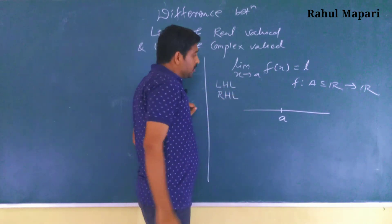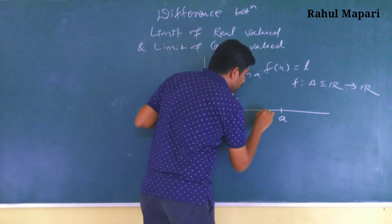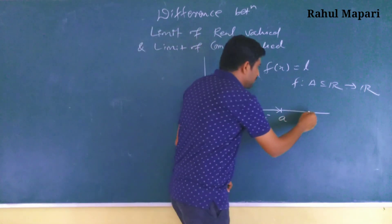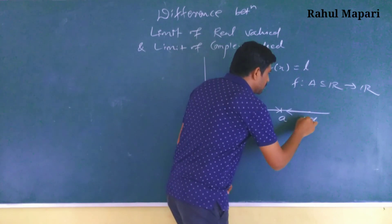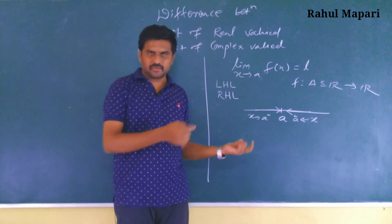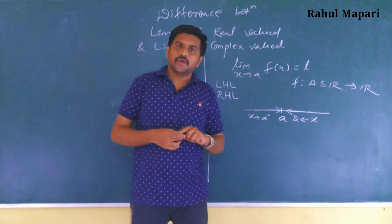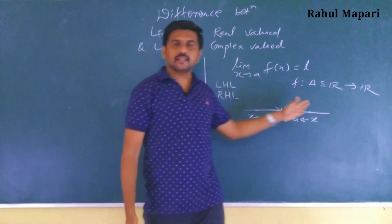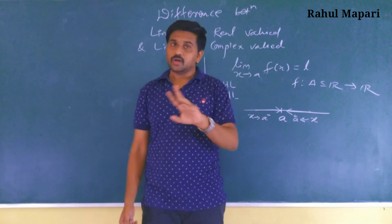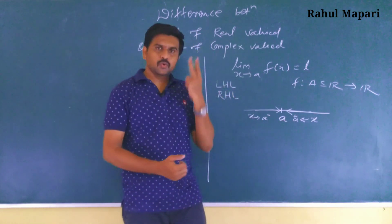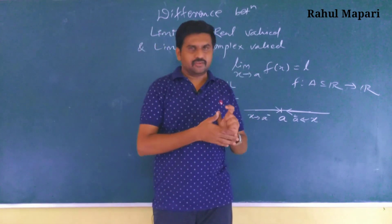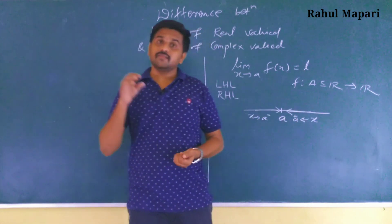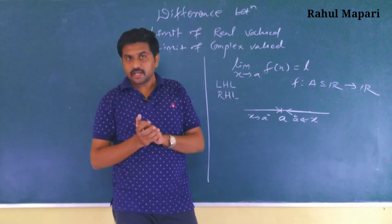When we check the limit at a, we check x tends to a from the left — the left-hand limit — and x tends to a from the right — the right-hand limit, using the minus and plus signs. Whenever x approaches a, there are only two paths: from the left and from the right. The real line has a positive direction and a negative direction, which is why we have exactly two paths and the concepts of left-hand and right-hand limits.